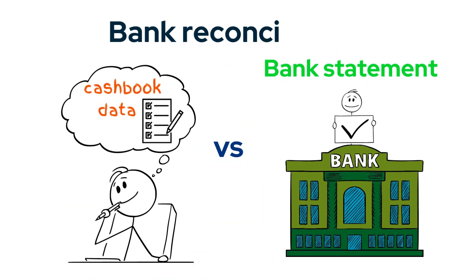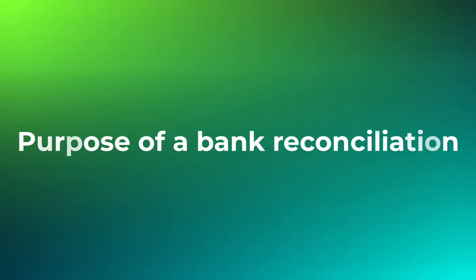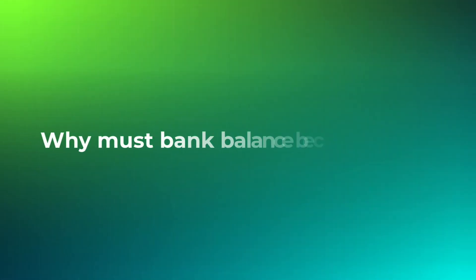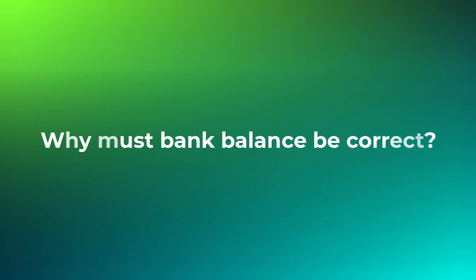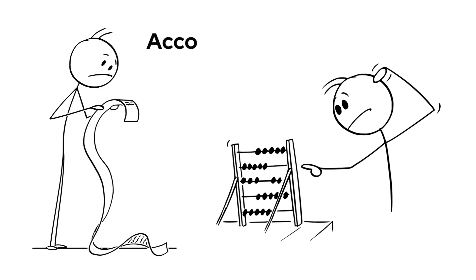In layman's terms, a bank reconciliation is the process of comparing data on cash books with the corresponding data on the bank statements. According to Sage, the purpose of a bank reconciliation is to make sure the transactions entered in accounting match the transactions on your bank statement, ensuring your bank balance is correct. For most businesses, the bank is where the money flow is gathered and monitored, and accountants want to account for every cent.